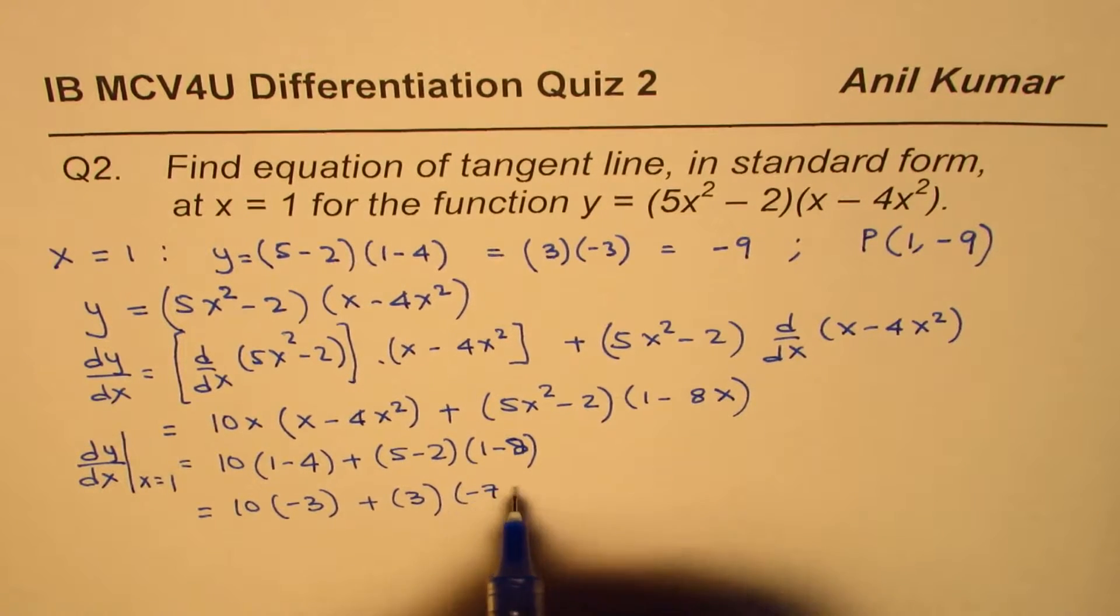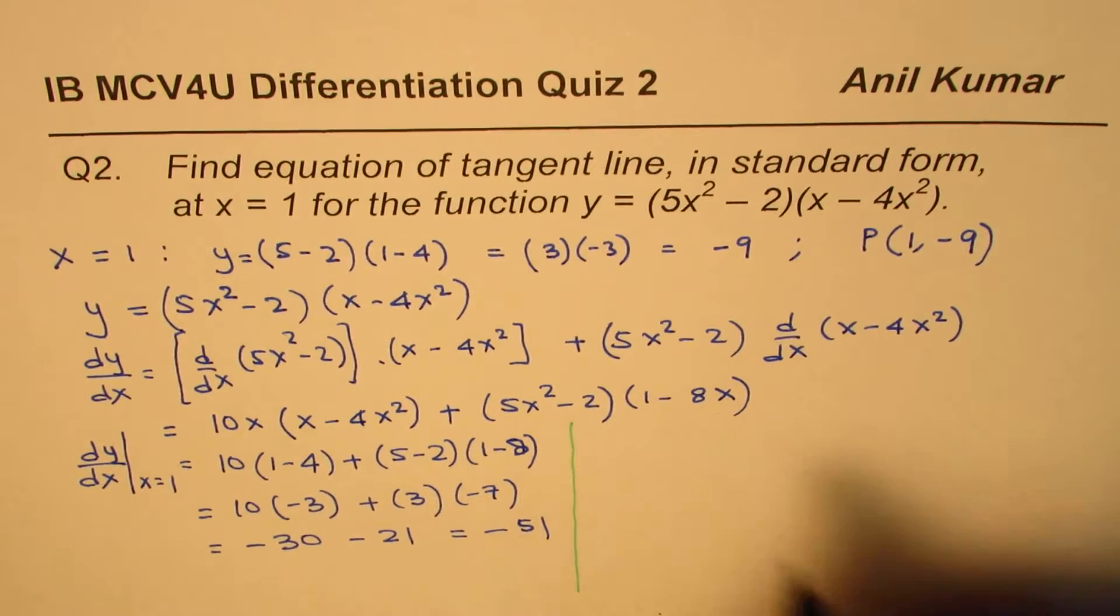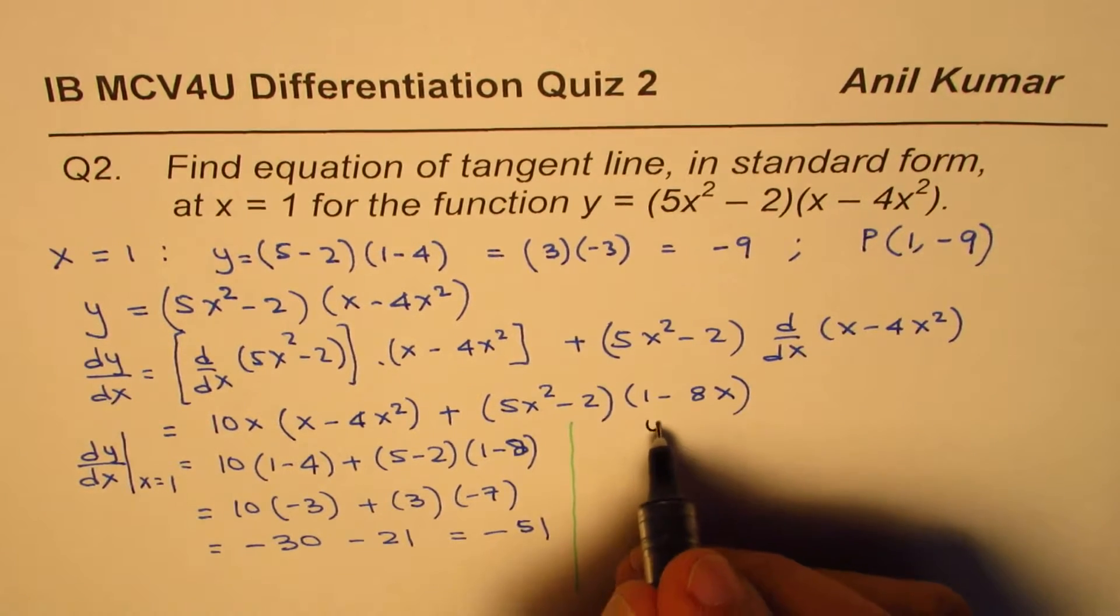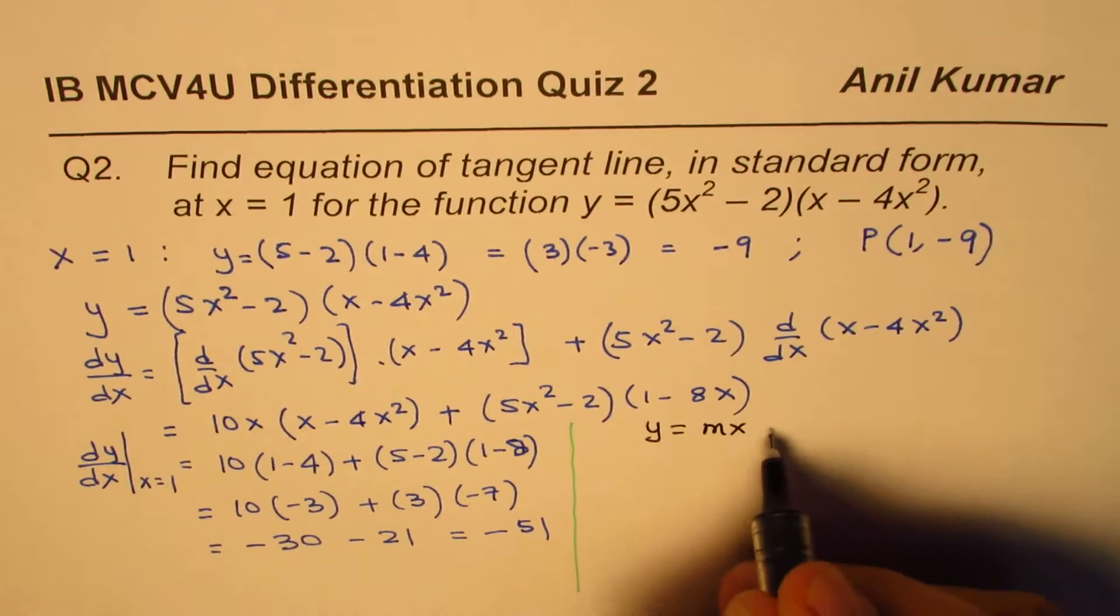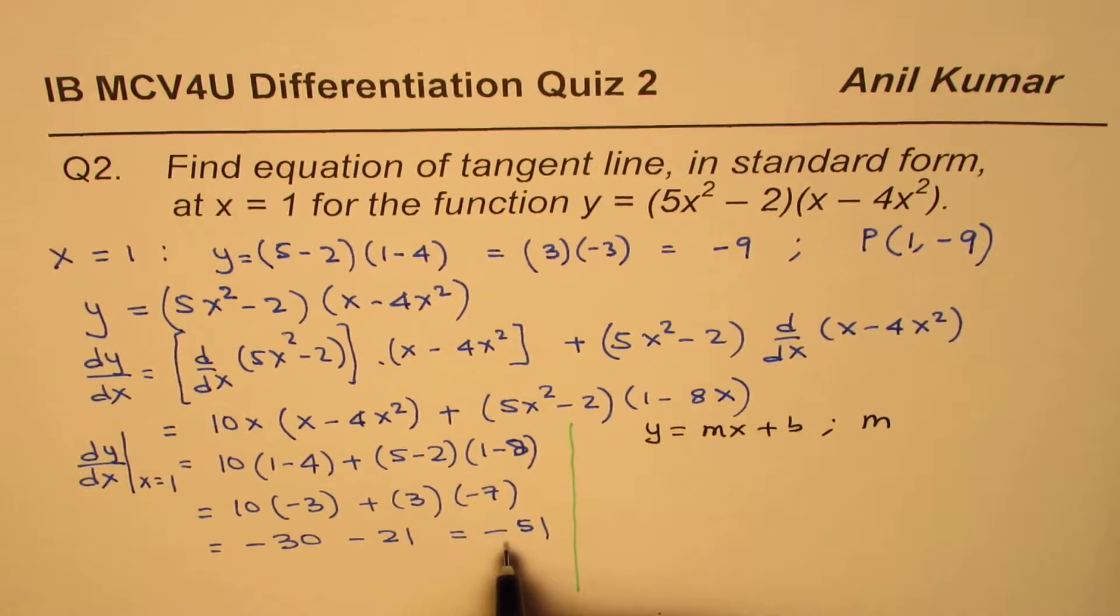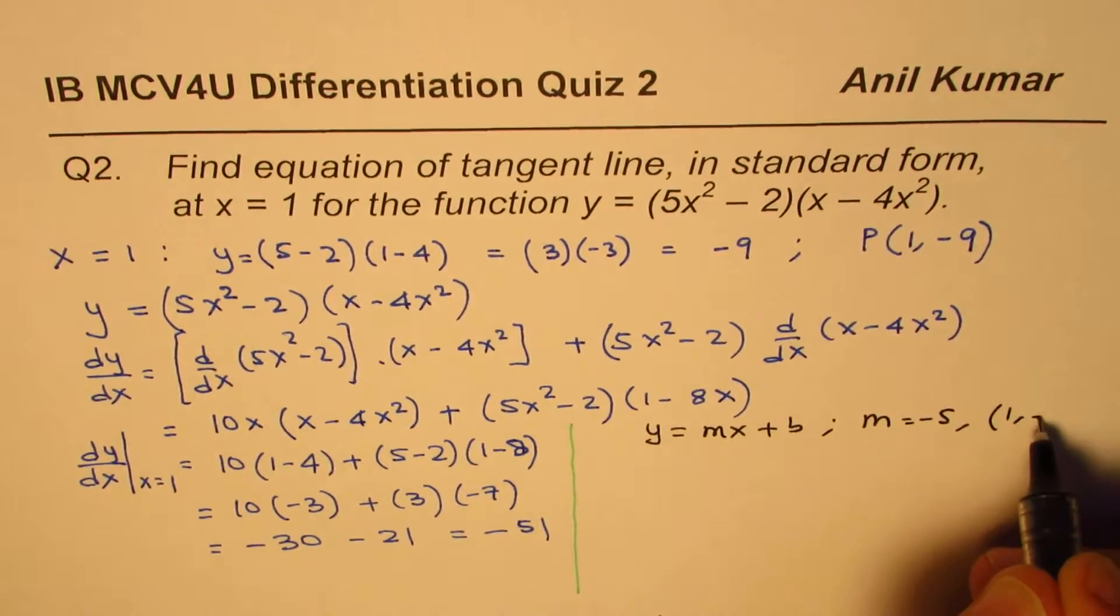Which is minus 7. So that is minus 30, minus 21, and it's minus 51. So what we found here is the derivative at x equals 1. And now we can find equation of the line. Equation of the line you can write as in the form of y equals mx plus b. We'll then convert to standard form where the slope is for us minus 51, and the point is 1 minus 9.